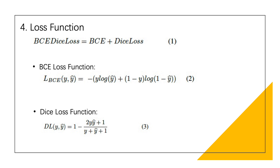The loss function used for our architecture is the BCE-Dice loss function. This loss function is a combination of the binary cross-entropy loss and the Dice loss function. This combination overcomes the shortcomings that come with both loss functions when used separately. Because these two loss functions are very commonly used, I will not introduce them in detail.